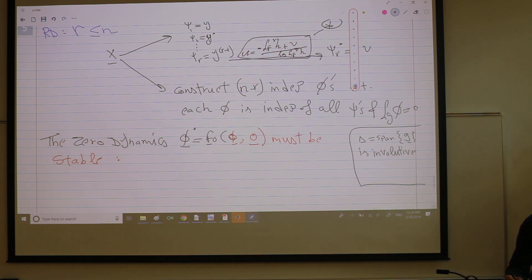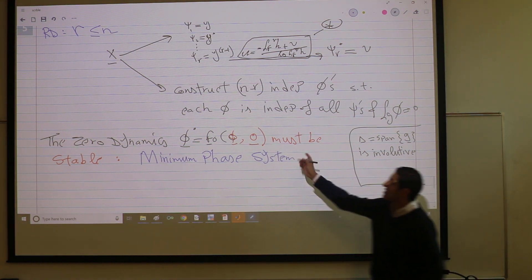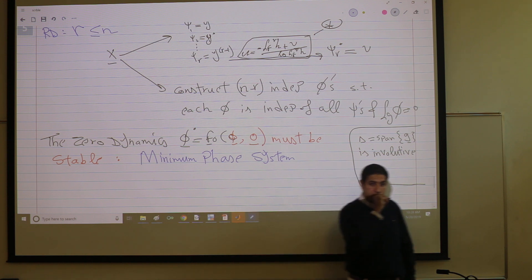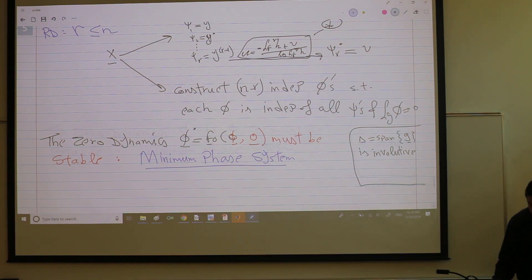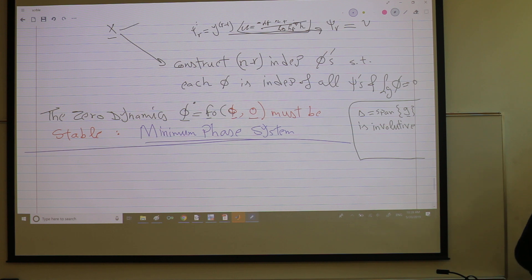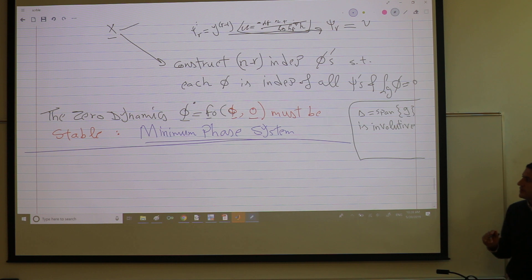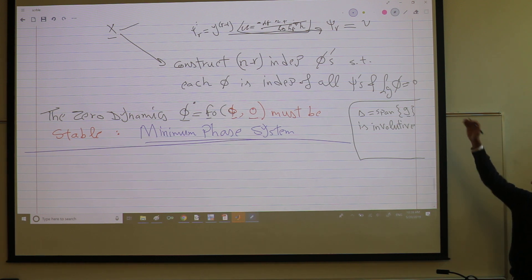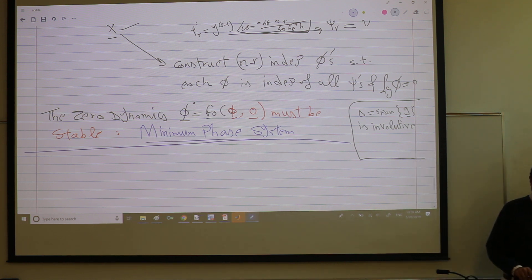And actually in the system if the zero dynamics is stable we have a name we have a definition for this system. The system is called minimum phase system. So a non-minimum phase system would be a system such that the zero dynamics is unstable. So this is a minimum phase system. Any questions so far? We will try to get an example but not now next time in the first ten minutes or so. But I'd like to talk about minimum phase systems first. Any questions up to this point?